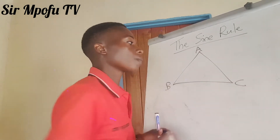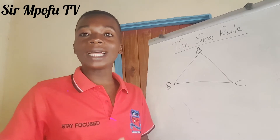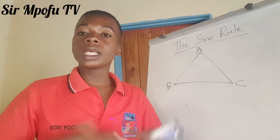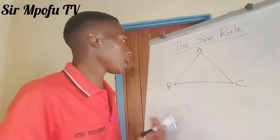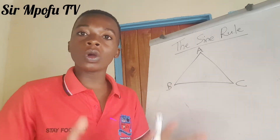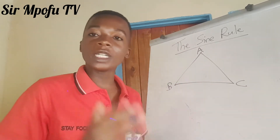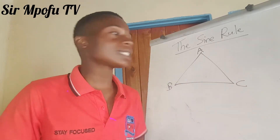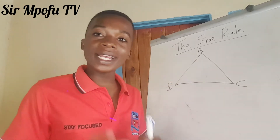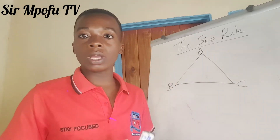This is our C. What I like about the sine rule is that, unlike the Pythagoras theorem — Pythagoras theorem is only applicable on a right-angle triangle.